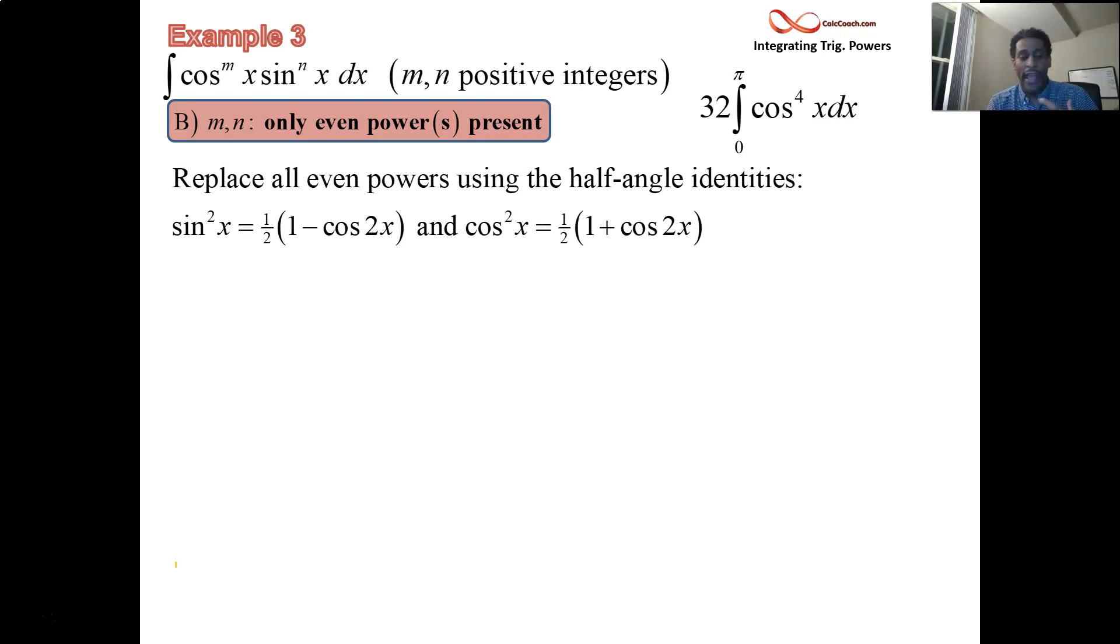We can replace sine squared with one-half the quantity of one minus cosine 2x. We can replace cosine squared with one-half the quantity of one plus the cosine of 2x. In our problem, what we have is cosine raised to the fourth. So what we're going to do with that is basically make that cosine squared and cosine squared. We could definitely write it as cosine squared quantity squared. Both things work. But here I'm just going to replace both of these guys with what's above there, one-half the quantity of one plus the cosine of 2x.